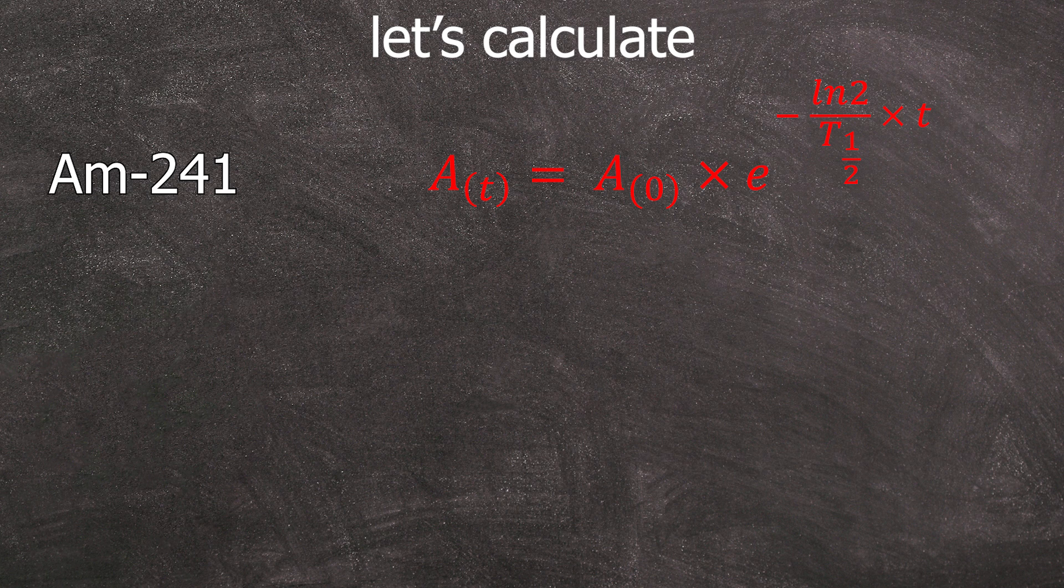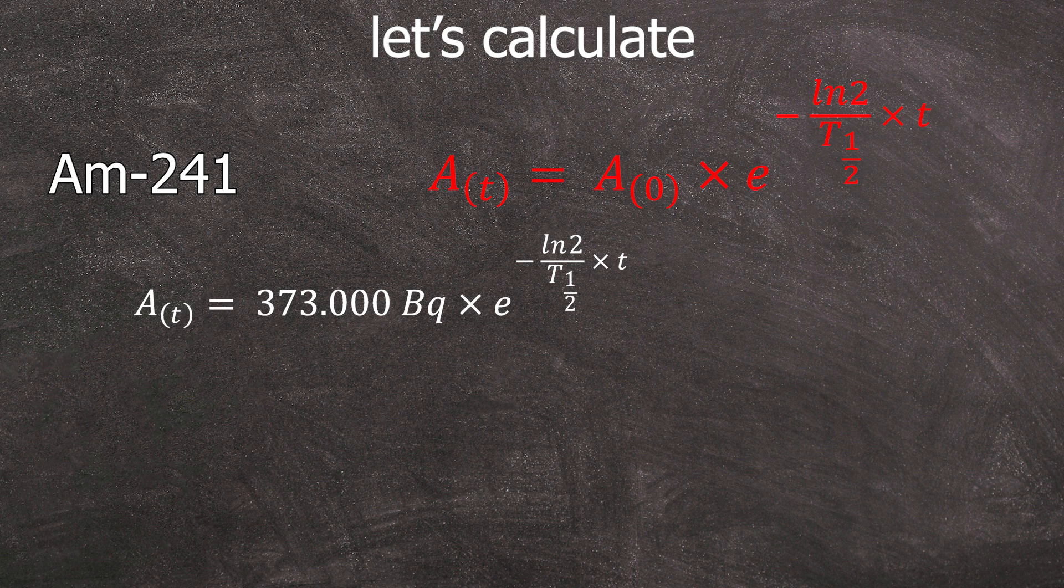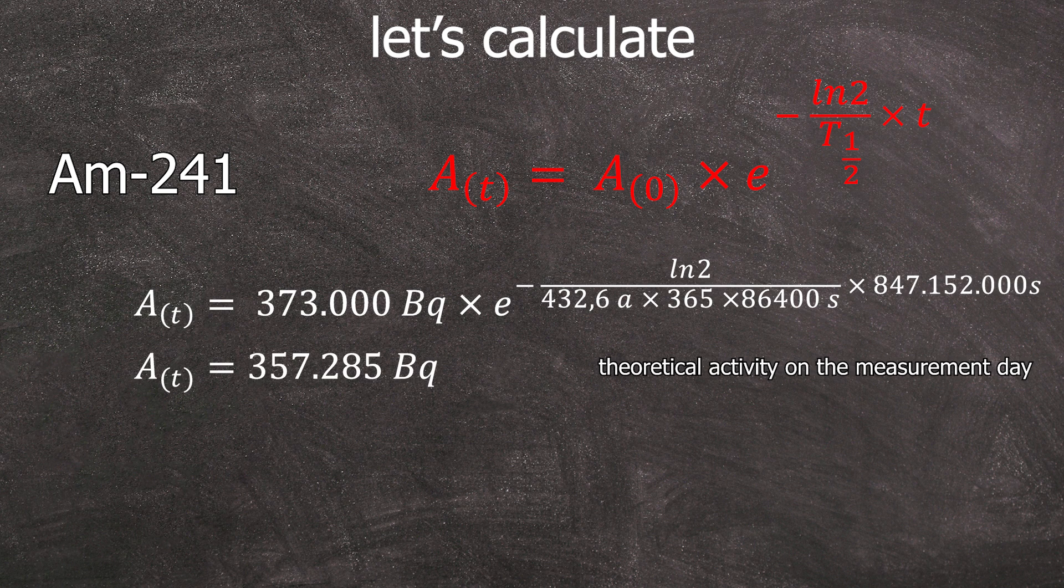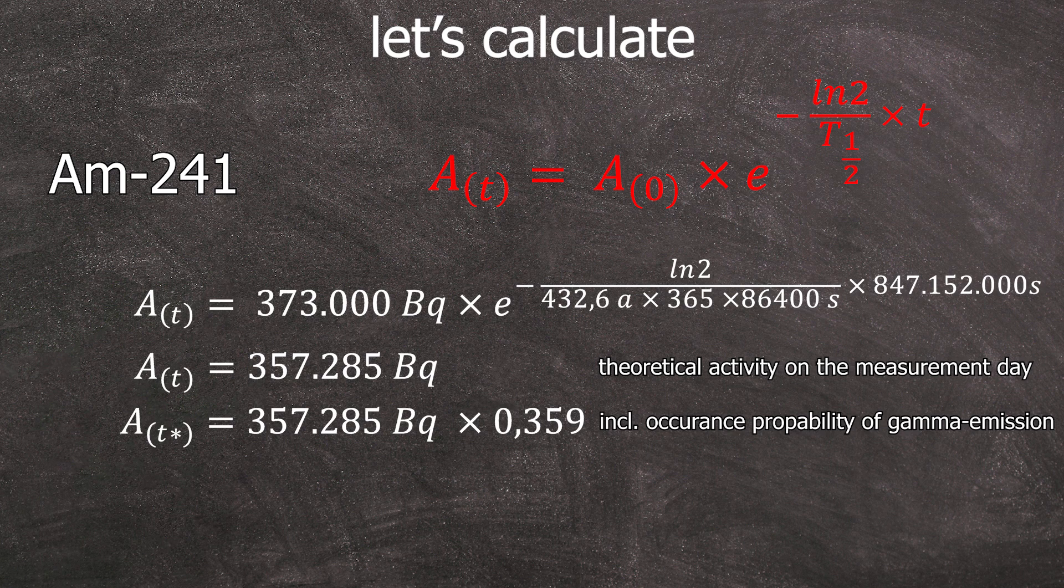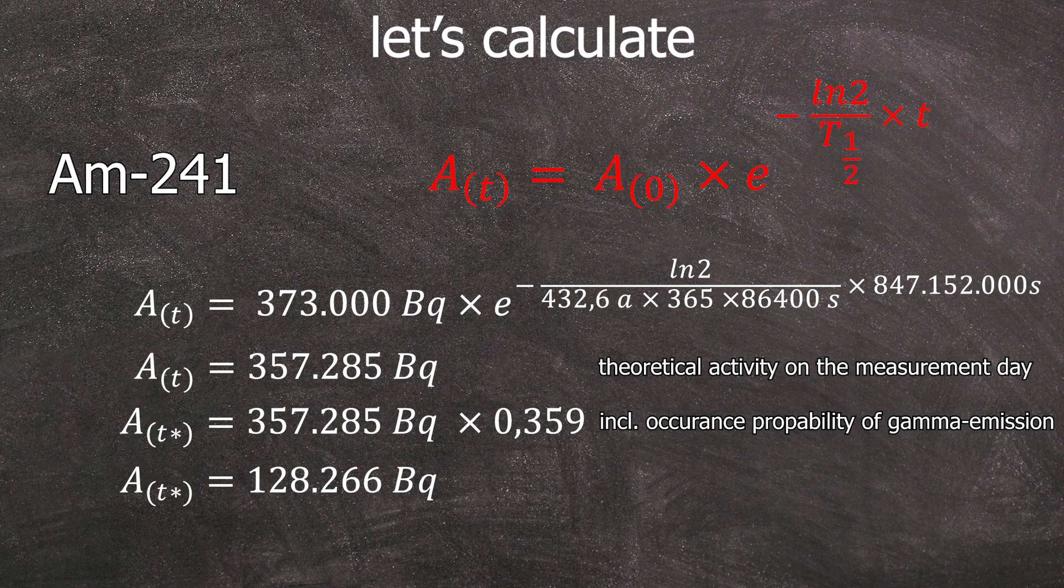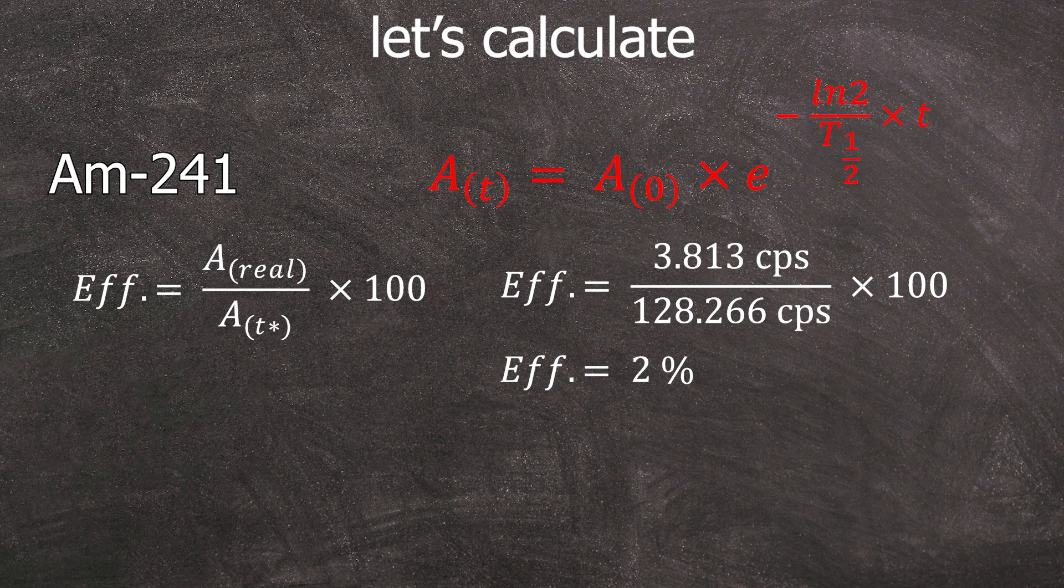Do you understand the calculations? If not, alright, let me explain it using again a very low energy Americium sample. The difference here, of course, is the original activity as well as the half-life. However, what remains the same is the time elapsed since the sample was produced with that activity. This results in an activity on the measurement day of 357.285 Bq. And including the occurrence probability of the 59 keV gamma line, it theoretically should detect 128.266 counts per second. However, only 3813 CPS were measured, resulting in an efficiency of 2% for the 59 keV line.